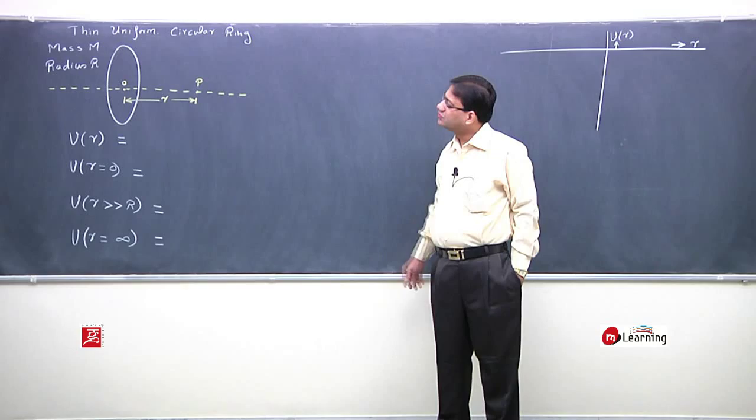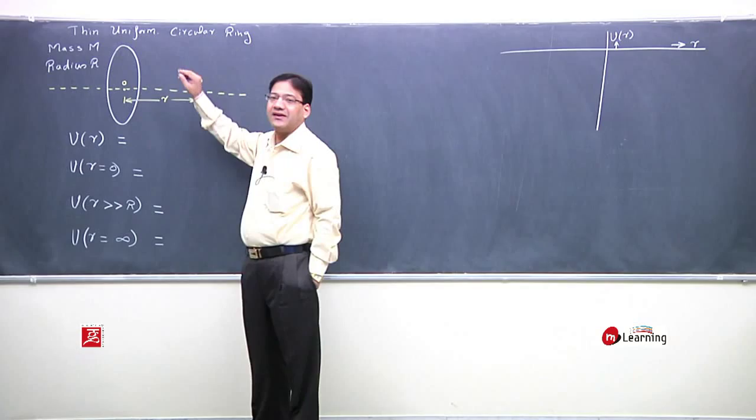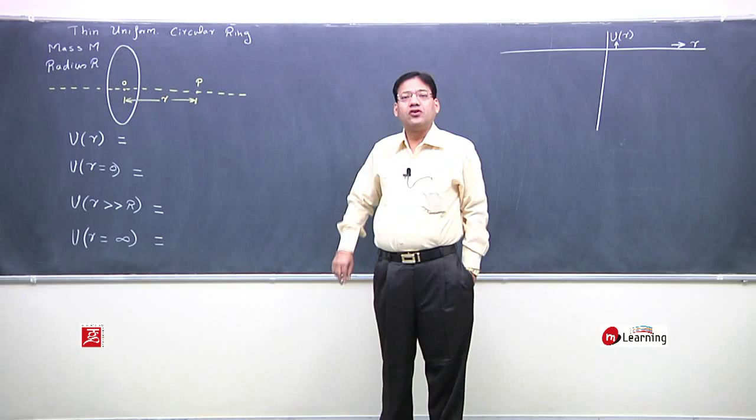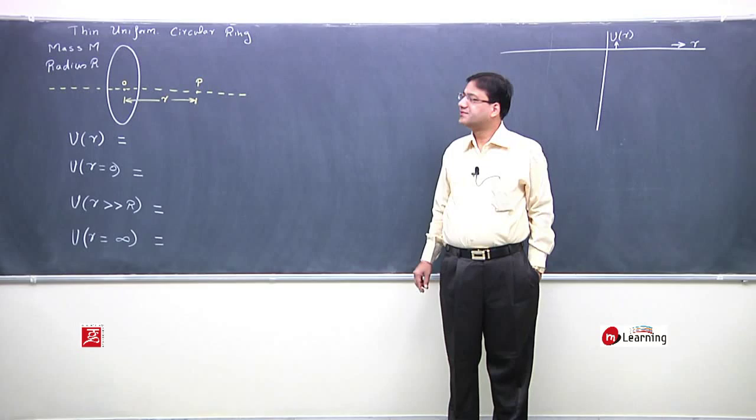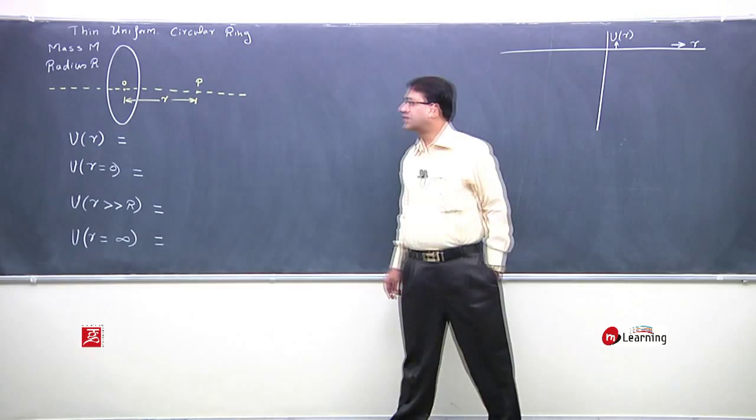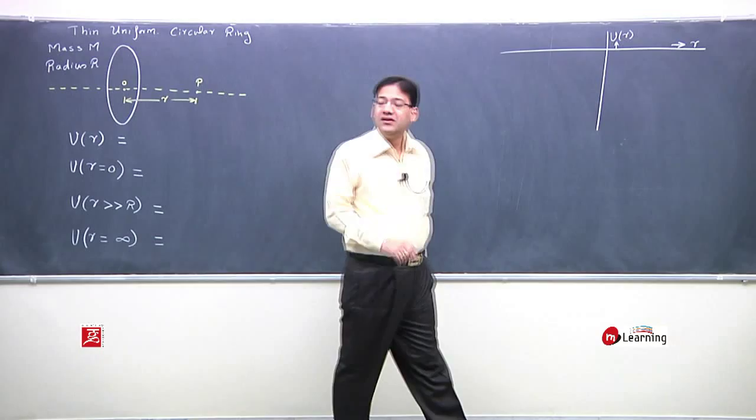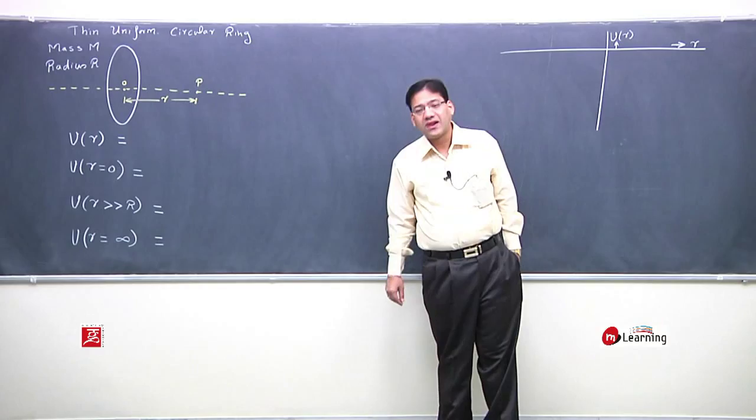This is a thin uniform circular ring, mass m and radius R. This is a small r to the particular point P, which is gravitational potential, what is that? If we come to the center and that value is just 0, then gravitational potential what could be? If r is very very large compared to capital R, then gravitational potential what could be? If r is infinity, then gravitational potential.